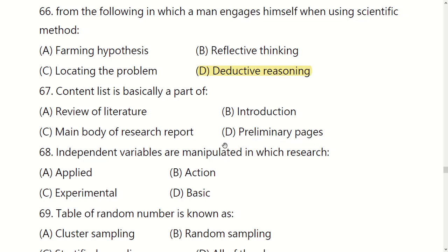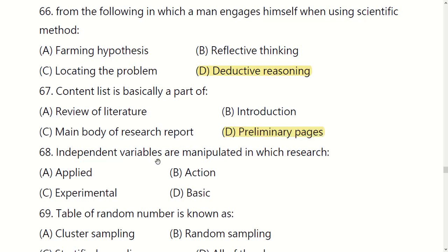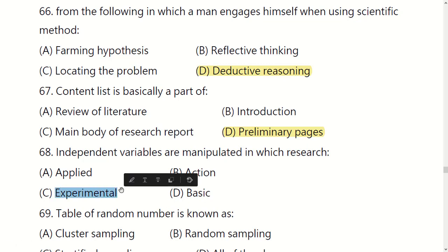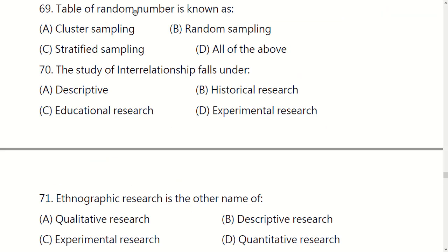Independent variables are manipulated in which research? Options are: applied research, action research, experimental research, or basic research. The right option is C: experimental research.